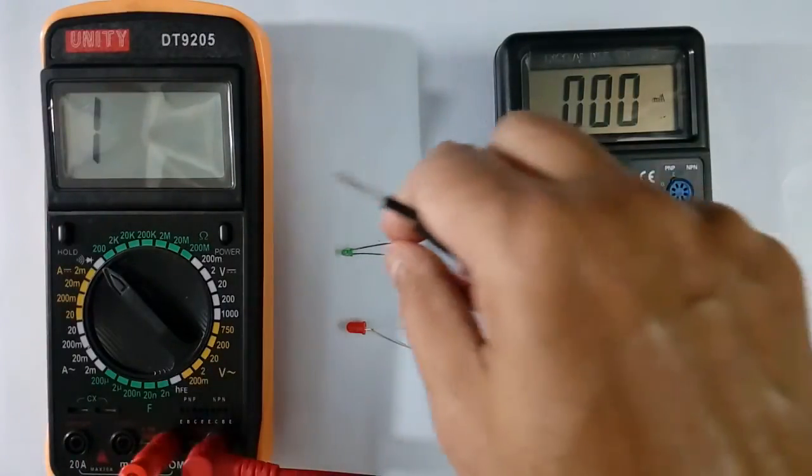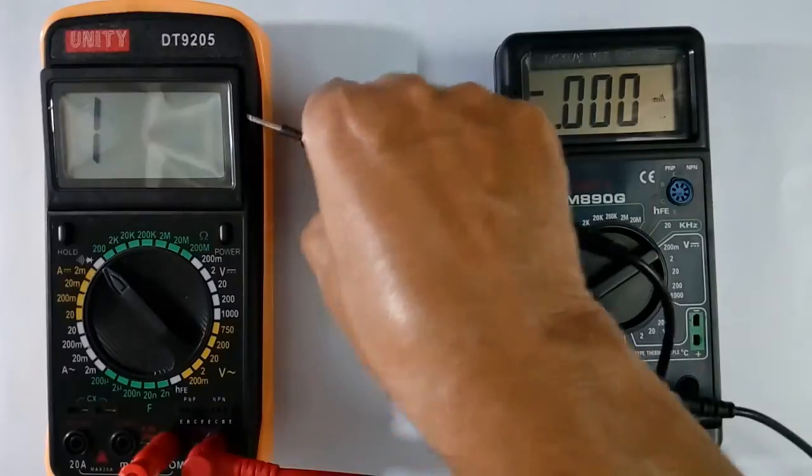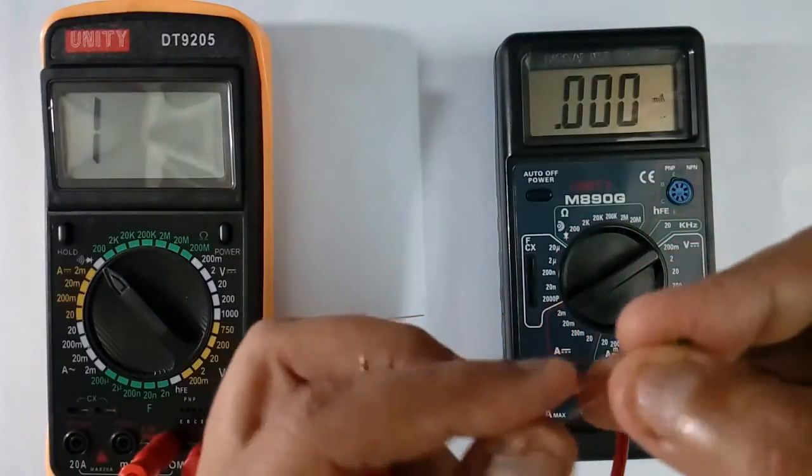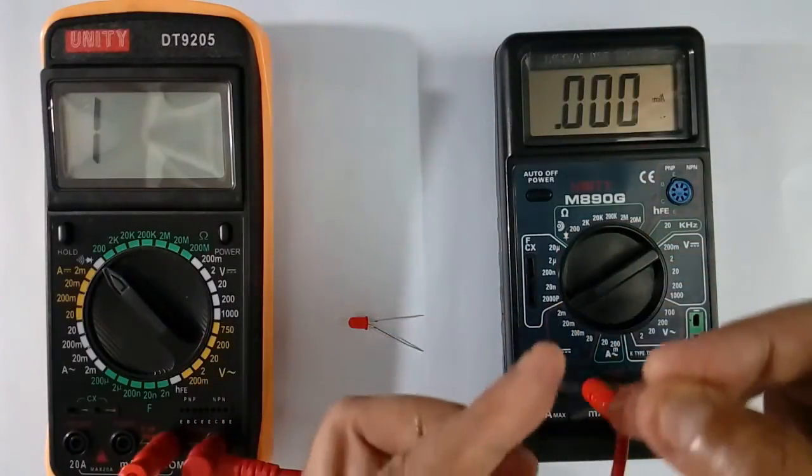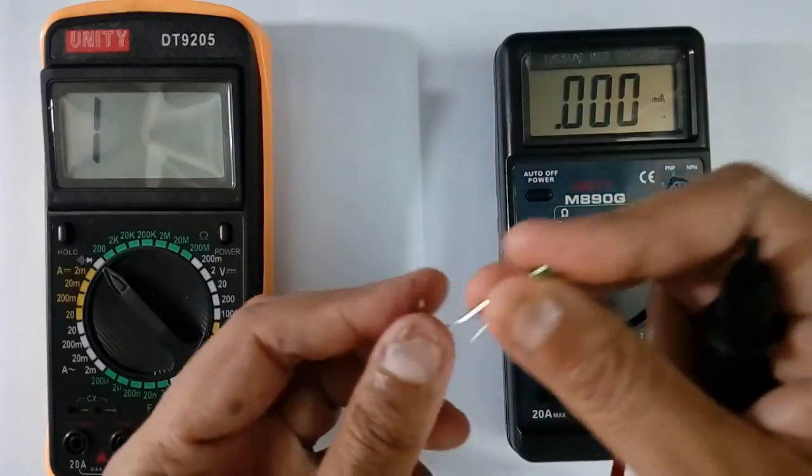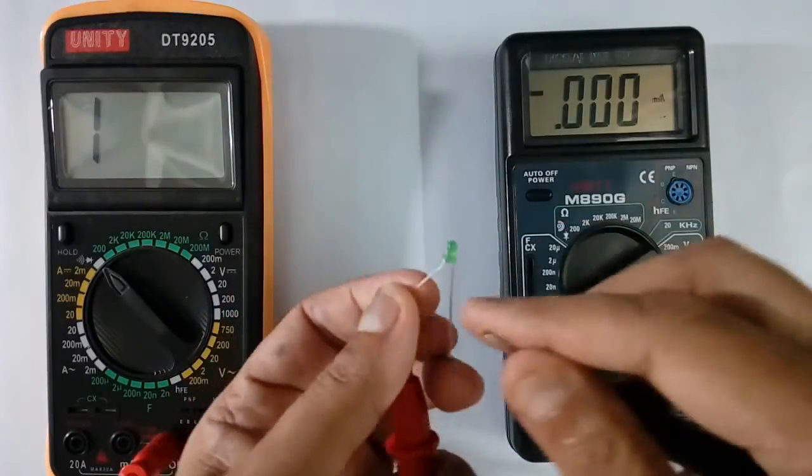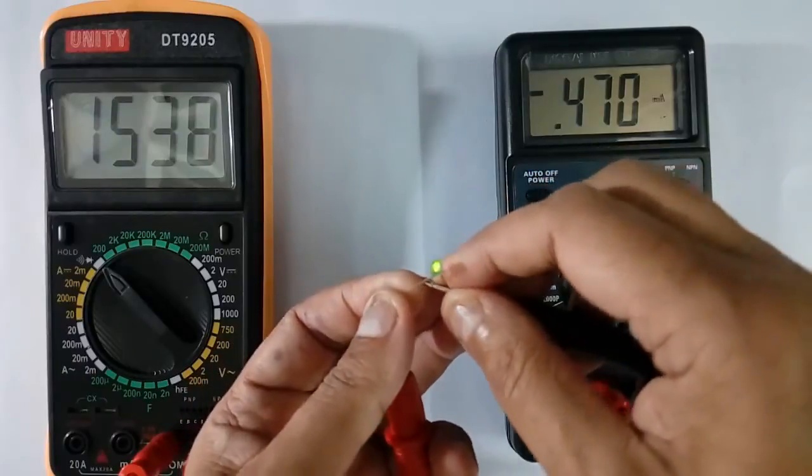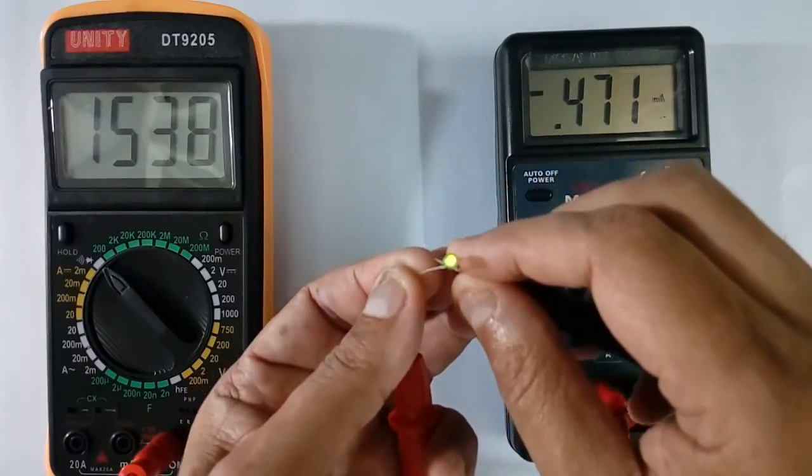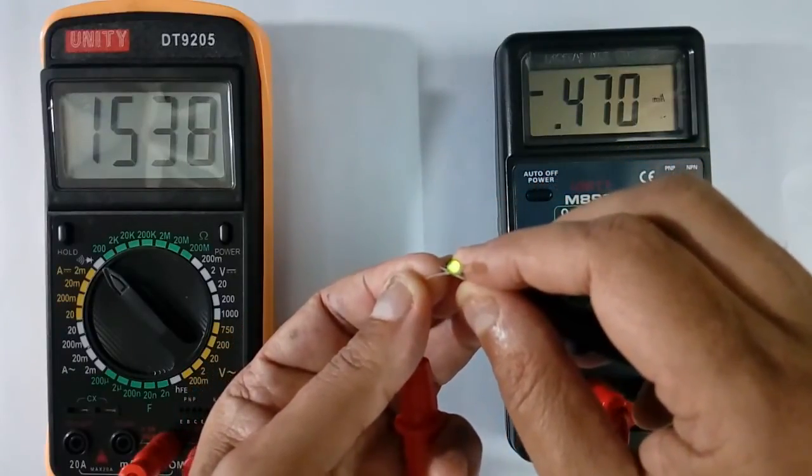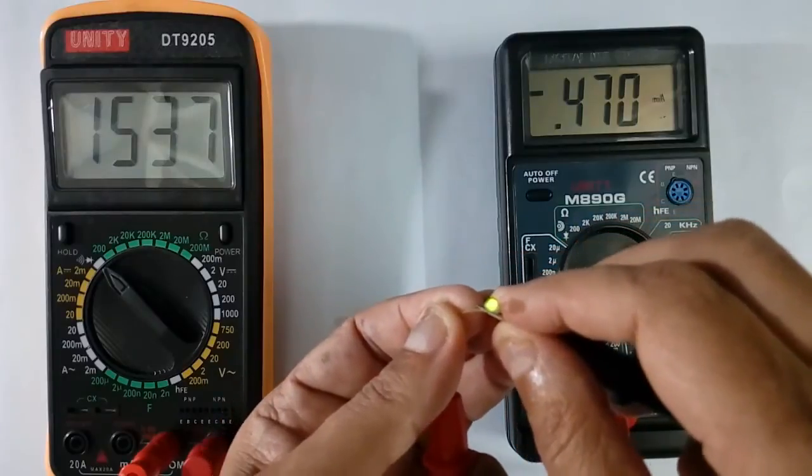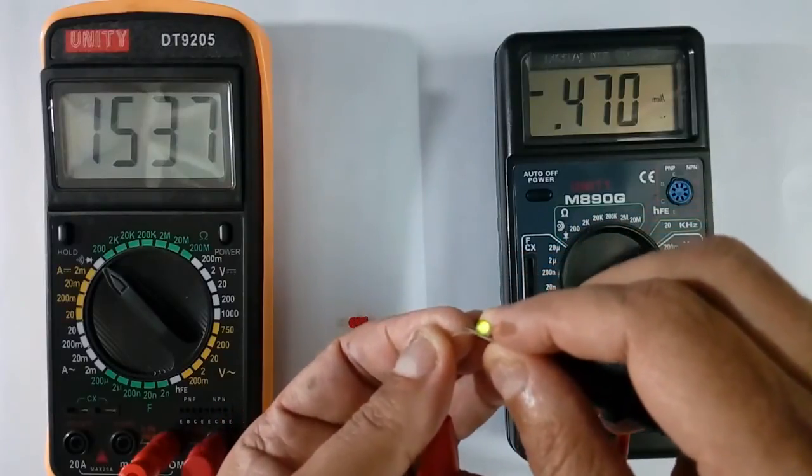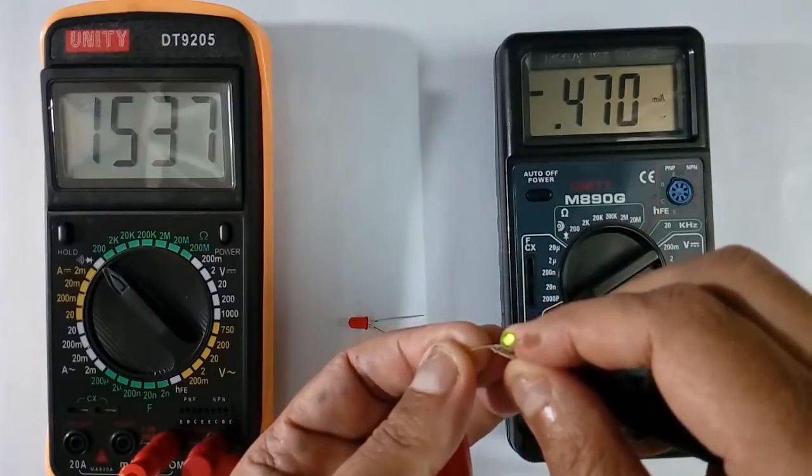Now I will take green LED. This also, bigger terminal, bigger one is anode. This green LED is glowing. Forward drop is 1.538 volt. This is in millivolt. Left side what is shown is millivolt. Current is 0.47 mA.